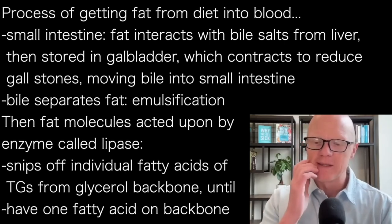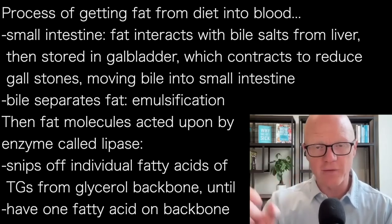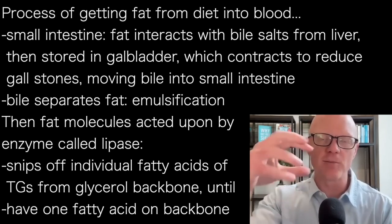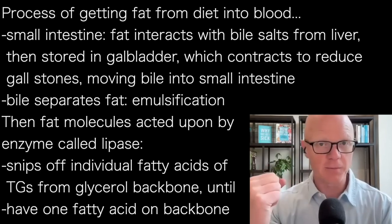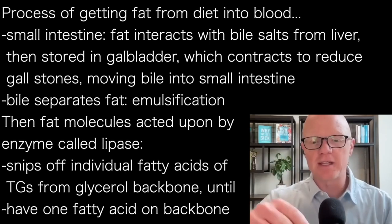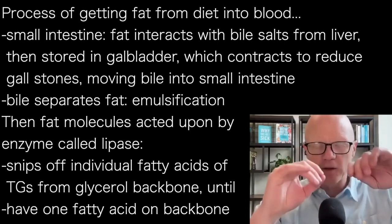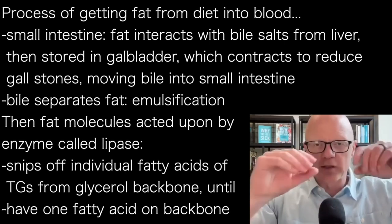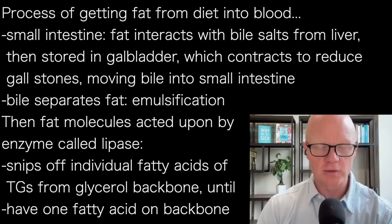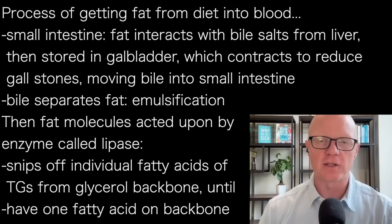At that point, the fat is interacting with bile salts from the liver that have been stored in the gallbladder. So the fat is coming down, the gallbladder contracts — thereby reducing the risk of gallstones — moving the bile into the small intestine. The bile will separate the fat out. Fat wants to clump together, so the bile pulls it apart into small little blobs. That process is called emulsification, which is what's happening there with the bile salts.